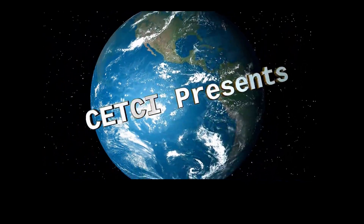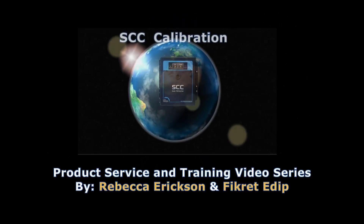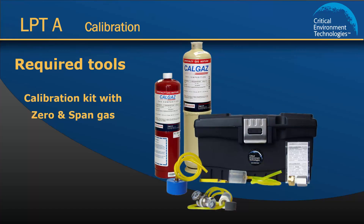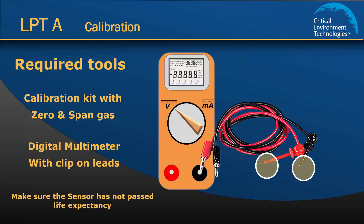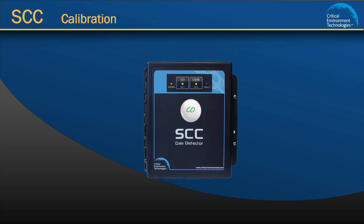Hello and welcome to Critical Environment Technologies video tutorial series: SCC calibration. In this tutorial I will demonstrate the calibration procedure for the SCC self-contained controller. To calibrate the SCC you will need a calibration kit, gas cylinders with a sufficient amount, correct concentration and type of gas, and a voltmeter with hook-on leads. It is also important that you make sure the sensor you are calibrating has not passed its life expectancy. In this demonstration I am using an SCC with one internal CO sensor using channel 1.